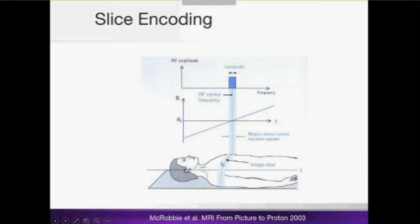To select only a single slice, we apply a slice-selection gradient so that the magnetic field — and therefore the Larmor frequency — varies along the patient's body. We then apply an electromagnetic wave whose frequency matches the Larmor frequency only within the desired slice. In the other slices this frequency is not the local Larmor frequency, so the resonance criterion is not met and they are not excited. Only in the selected slice is the resonance criterion satisfied, and that is how we excite only that slice.